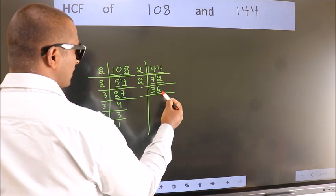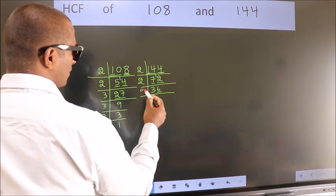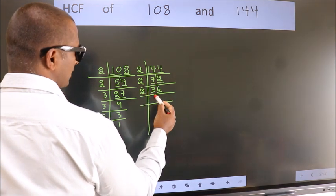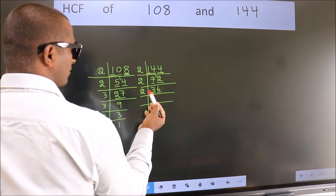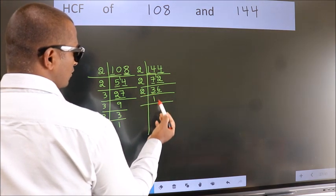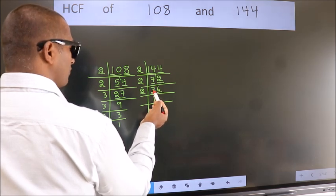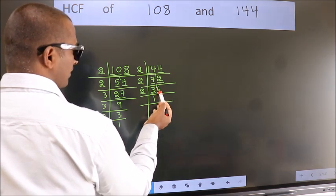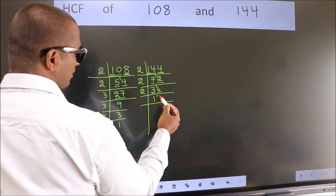Now, last digit 6, even number, so take 2. First number 3, a number close to 3 in 2 table is 2 times 1 is 2. 3 minus 2 is 1, 1 carried forward 16. When do we get 16 in 2 table? 2 times 8 is 16.